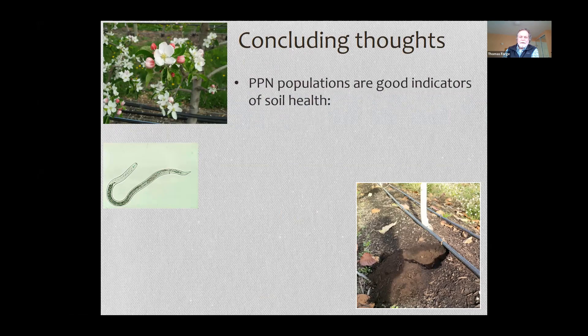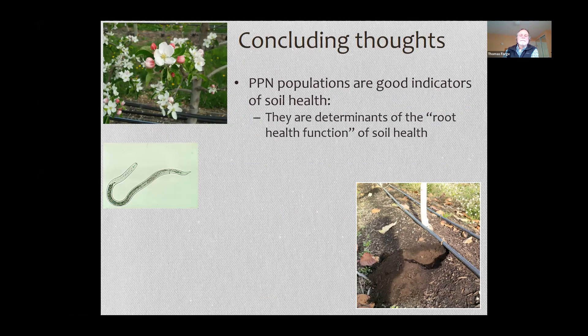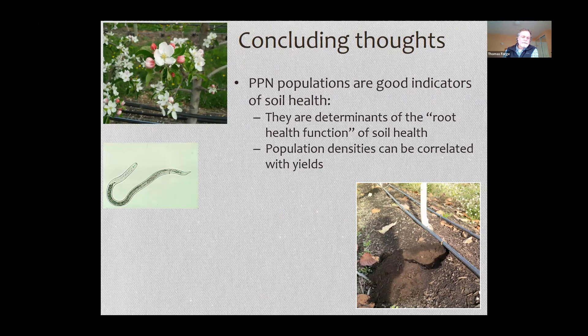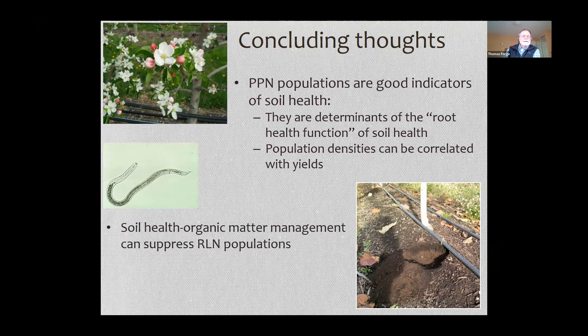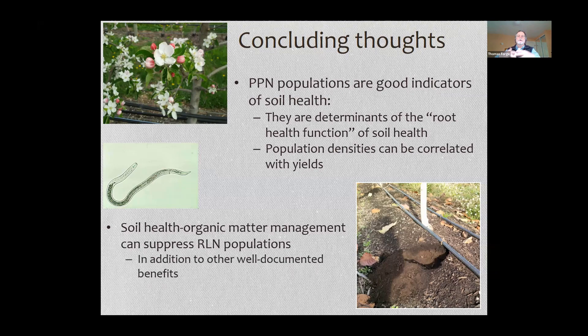In conclusion, plant parasitic nematodes are good indicators of soil health and should be considered as one of many measurements in a comprehensive soil health assessment. They are direct determinants of root health, and their population densities can be correlated with yields and packouts. Soil organic matter management practices can suppress root lesion nematode populations in addition to many other well-documented benefits, creating a linkage between overall soil health and these organism populations. As a caveat, responses to mulch alone are not always consistent.